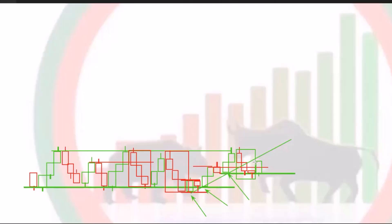Yes. So if this movement is really stronger and really it's a true trendy market, then after this candlestick, market may create another candlestick by the seller side. It will not break this support level by trend line.